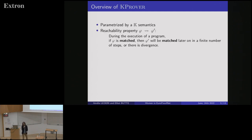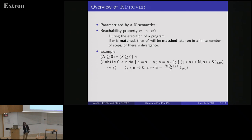The Kprover is parameterized by your semantics, so it's possible to translate these semantics into matching logic. It's natural to define reachability properties because you have a transition system. The semantics is: during the execution of a program, if psi is matched, then psi-prime will be matched later in a finite number of steps, or there is a divergence. It's possible to do symbolic execution thanks to Kprover — you have two abstract variables and can initialize the concrete variables of the program with them, expressing the result when the program terminates.